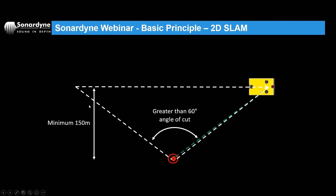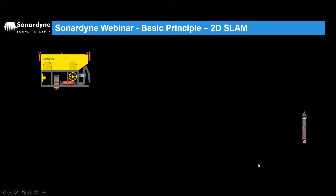You'll notice there's a 150-meter offset — we'll talk about that in a moment. It's related to depth error in the system.